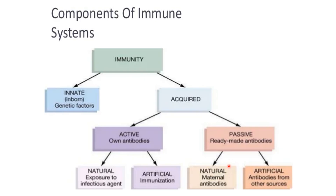In the fetus, immunity received through maternal antibodies via the placenta is natural passive immunity. Artificial passive immunity involves antibodies from other external sources. For example, an anti-D vaccine given to a Rh-negative mother is an example of artificial passive immunity — the antibodies are produced elsewhere and introduced into the body.